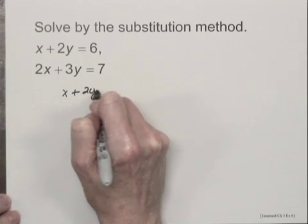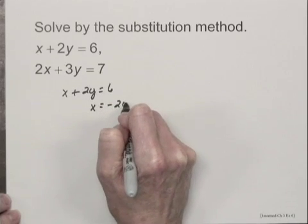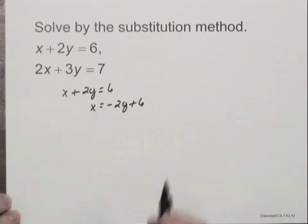I have x plus 2y equals 6. Subtracting 2y on both sides, I have x equals negative 2y plus 6.